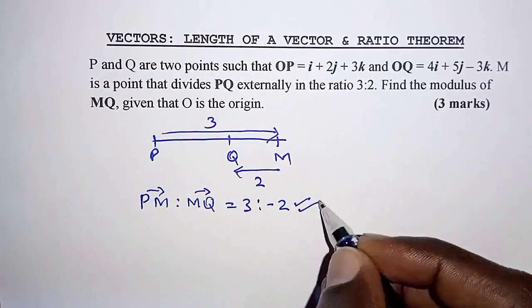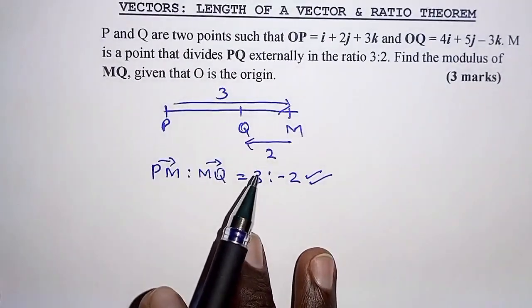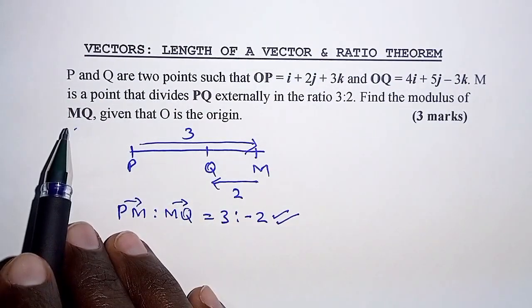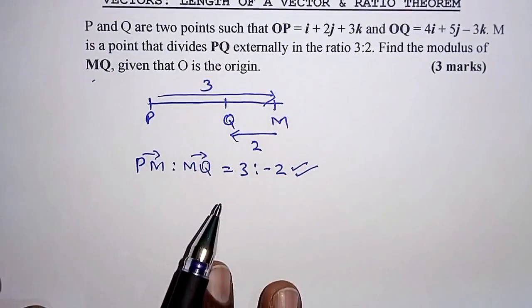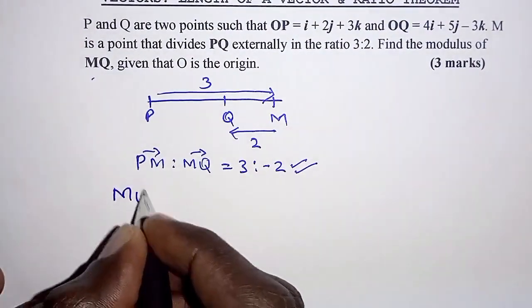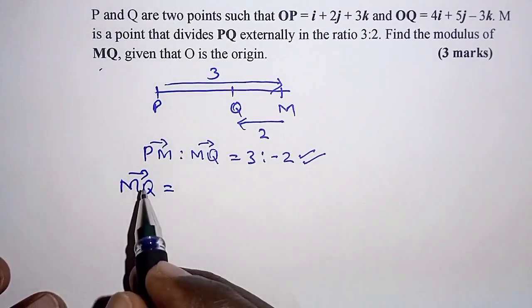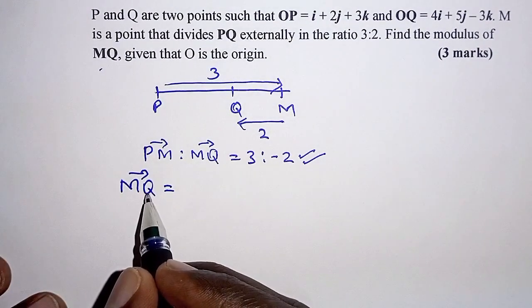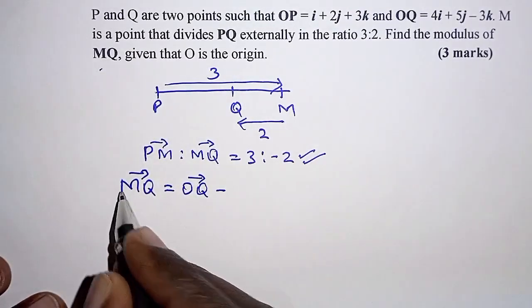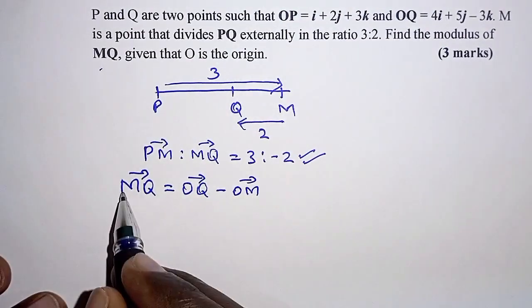This is the ratio that you are going to use in working out this problem. The question requires us to determine the modulus of MQ, that is the length of MQ. First thing we are going to determine is vector MQ. MQ is calculated as position vector of Q which is OQ minus position vector of M which is OM. That is Q minus M.